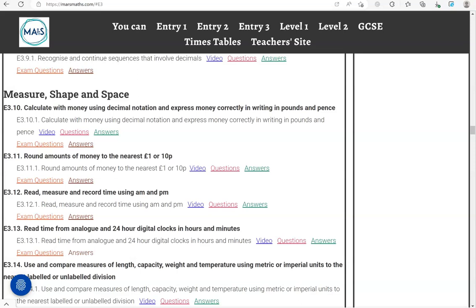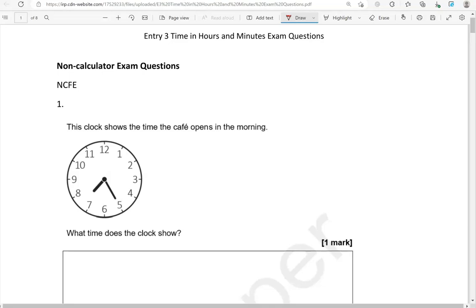In this video we'll go through exam questions that cover the criteria: read time from analog and 24-hour digital clocks in hours and minutes. You can locate the questions on the massmass.com website under Entry 3. The questions come from different exam boards. We'll start with the non-calculator questions and then move to the calculator questions.